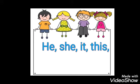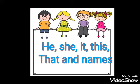Aur jo 'is' hai, woh in sare shabdon ke saath hum log use karte hai — jaise ki he, she, it, this, that, aur jo bhi names hote hai. Jaise ki: He is a boy. She is a girl. It is a dog. This is a bat. That is a bat. That is a tree.